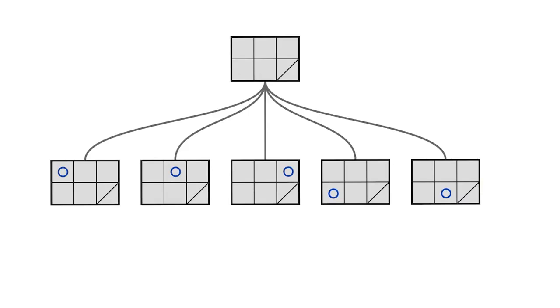X goes next and can put its piece anywhere on the game board that has not been taken by O. So no matter which position O occupied for its first move, X has four choices. We can quickly draw the nodes for level 2 of our tree.